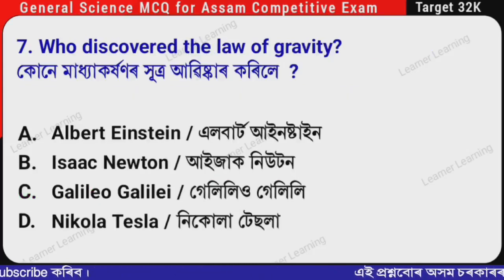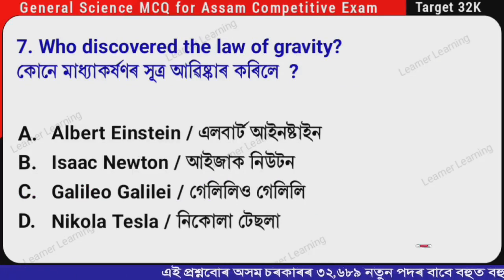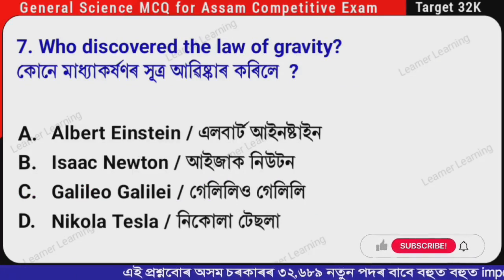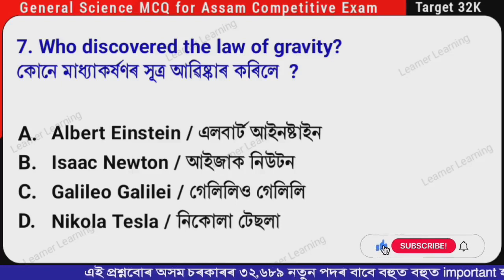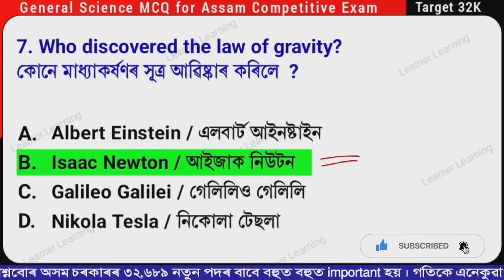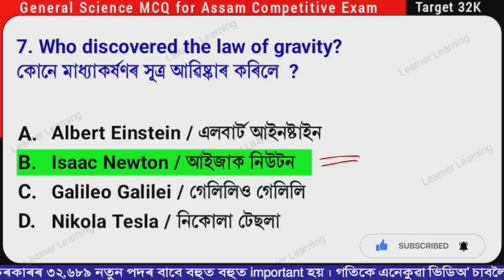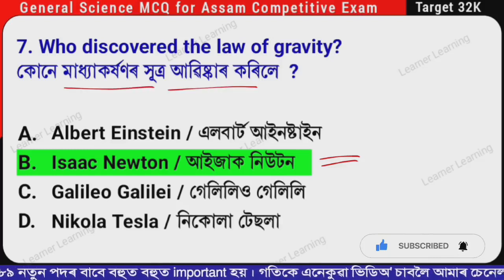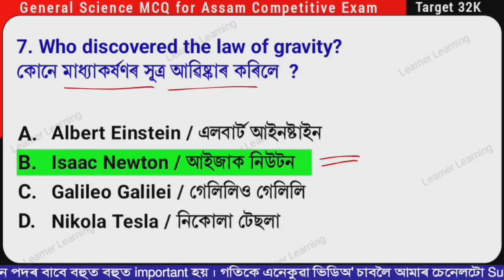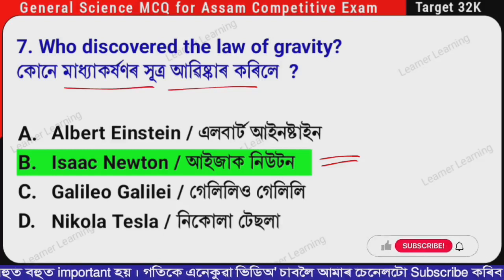Next question: Who discovered the law of gravity? (Assamese: Kone madhah karakhanar khutro abhiskar kori le?) The correct option is Option B — Isaac Newton. Isaac Newton discovered the law of gravity. It is a very very important question.